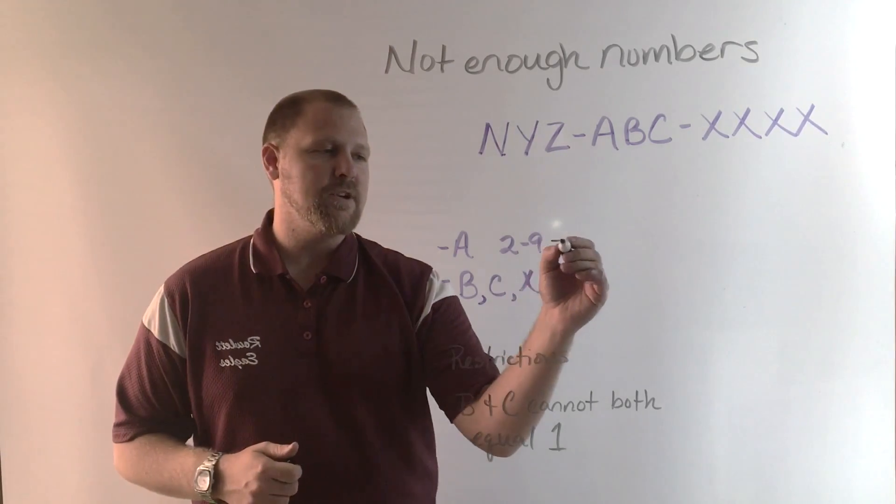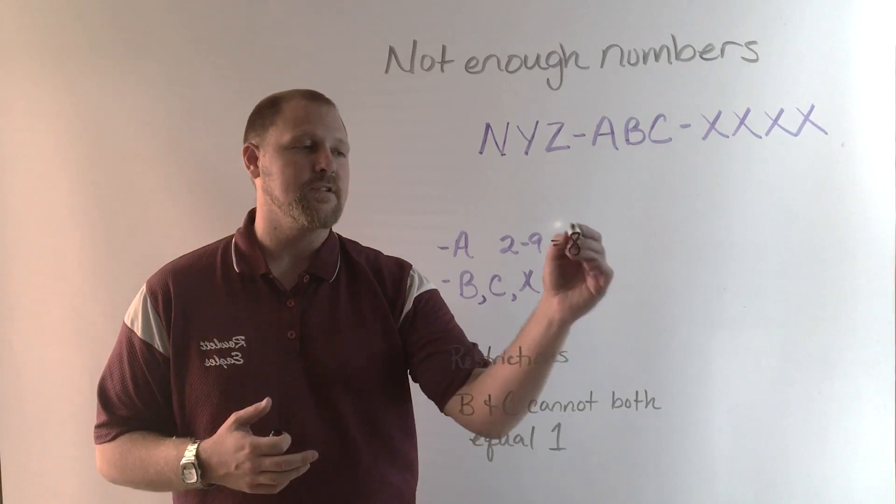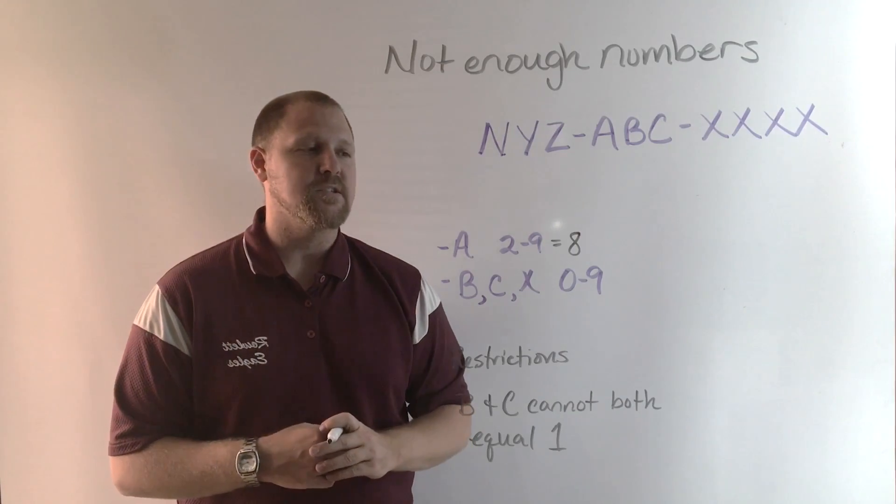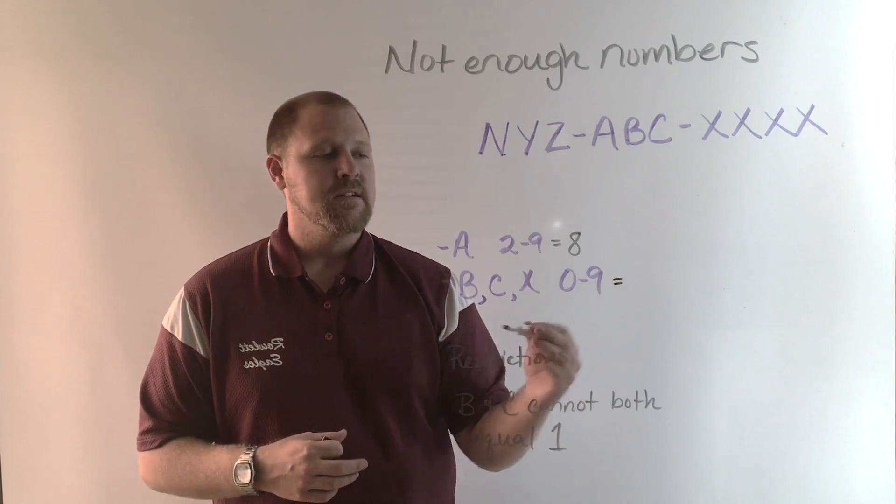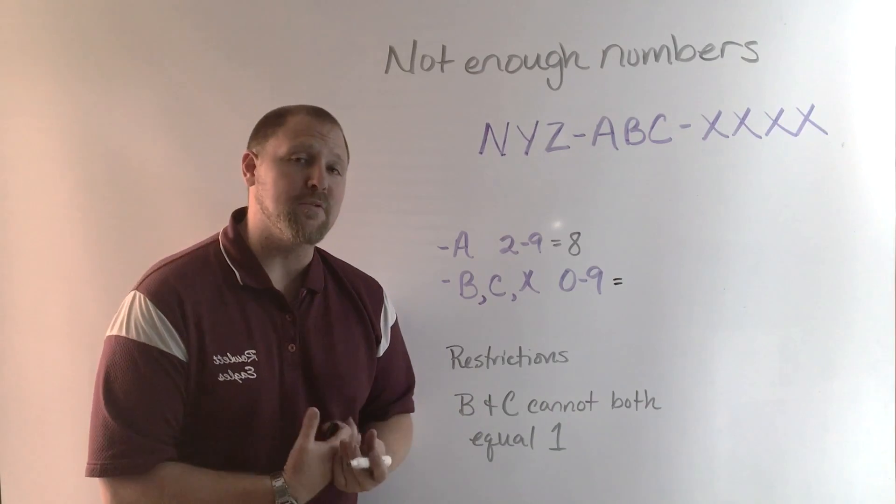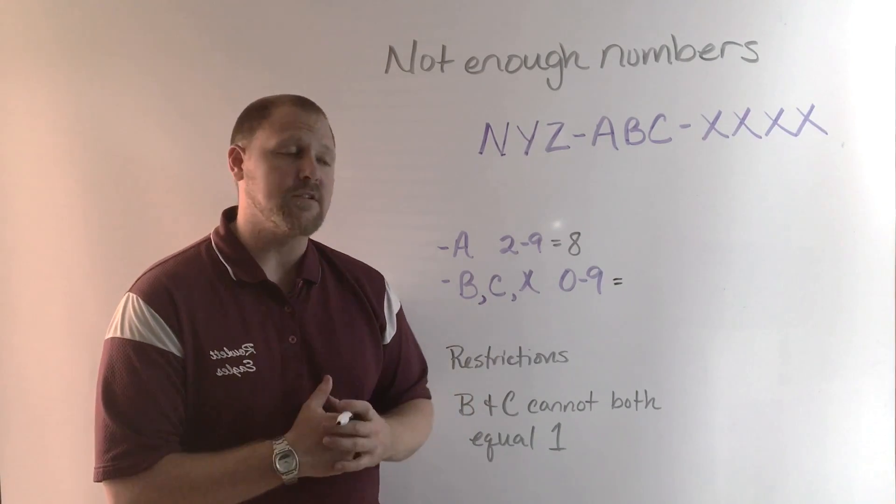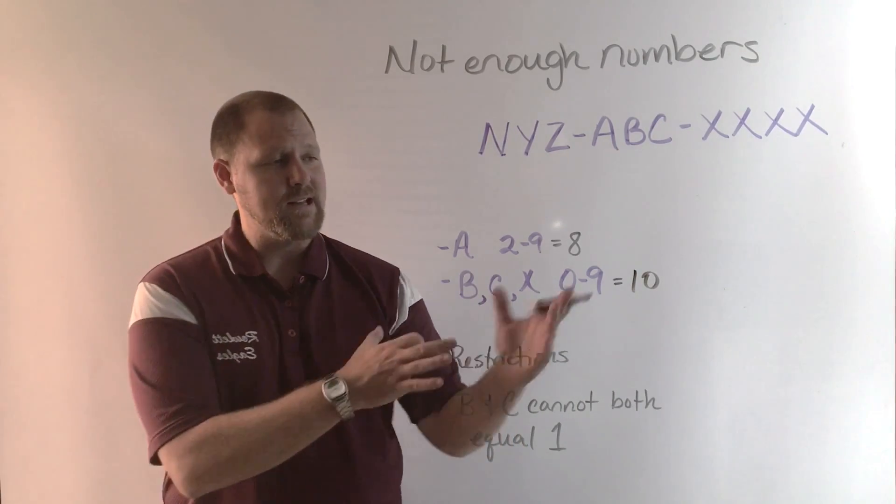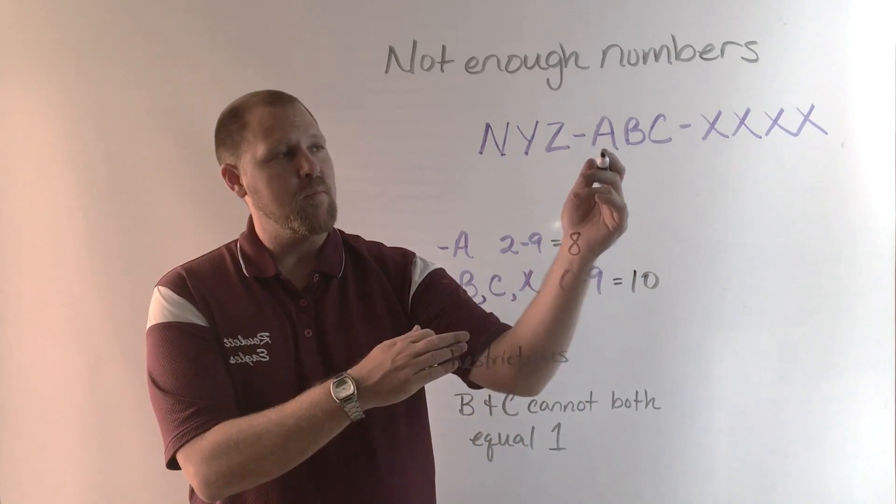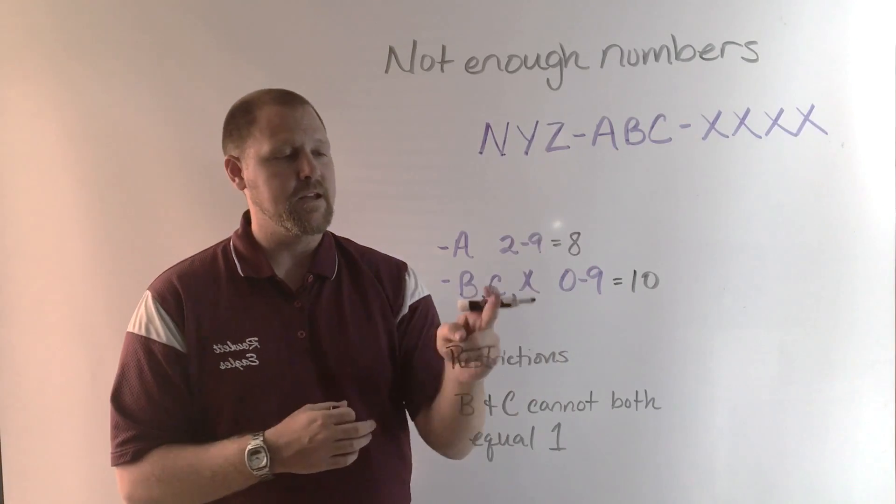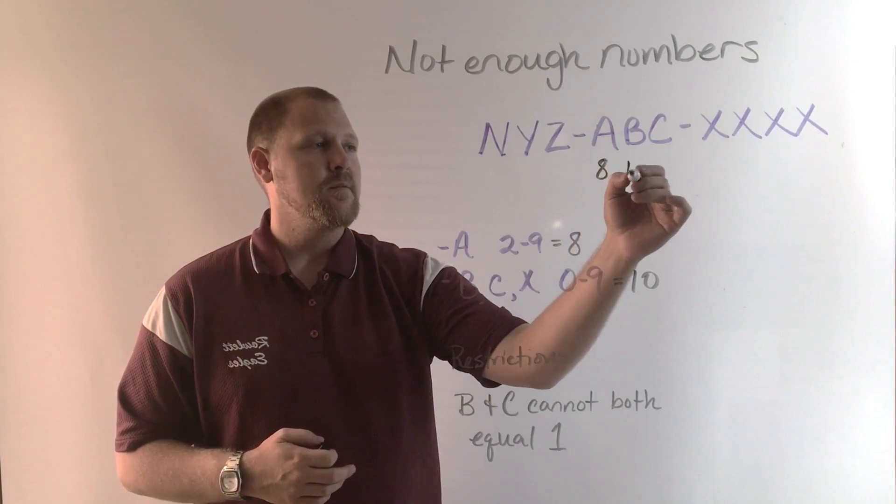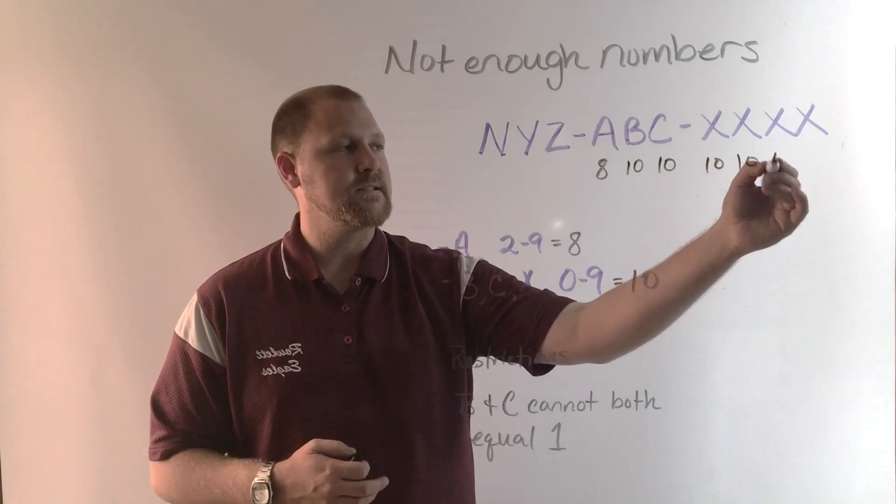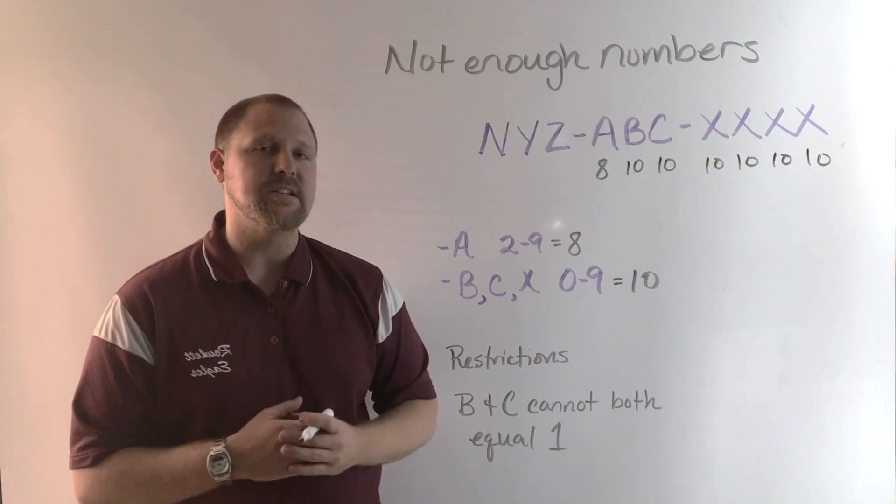Here 2 to 9, if you subtract those you get 7, but remember you've got to add one. So that's eight possible digits for the position of A. And then 0 to 9, it looks like nine numbers. Most students will think it's nine numbers, but it's actually 10 digits. So the way I like to do it, I like to line the number up to the letter that it can be. So A can be eight digits, B can be 10, C can be 10, and all four X's can each be 10 digits.